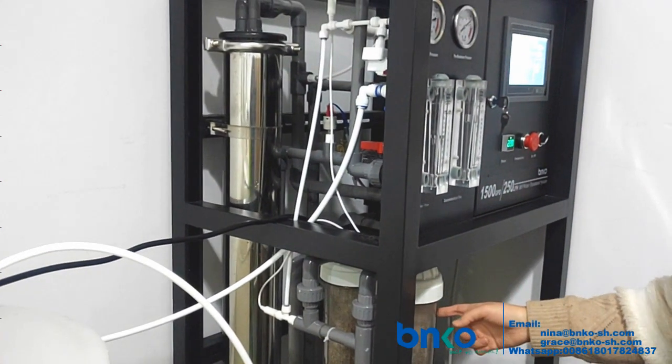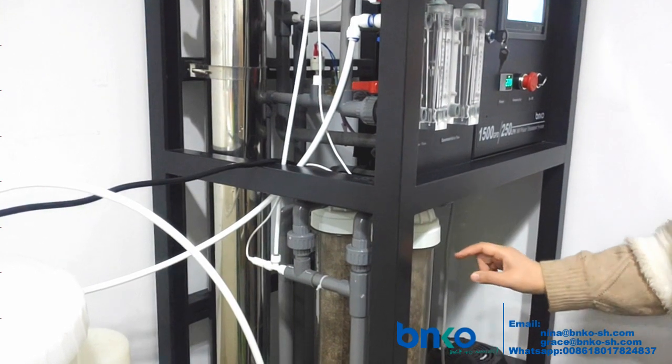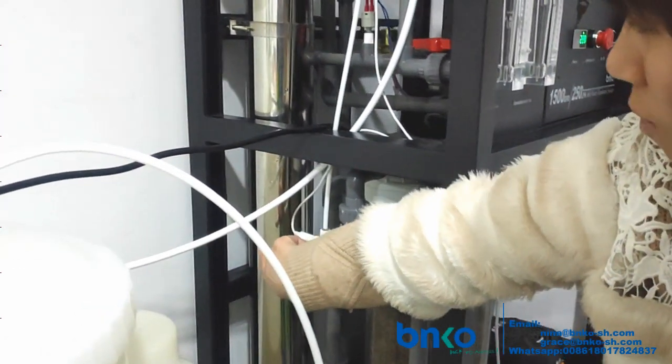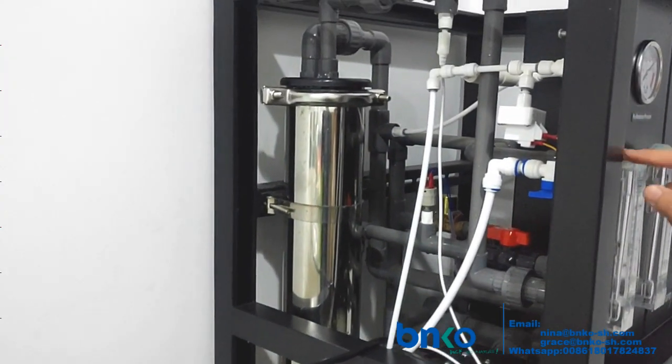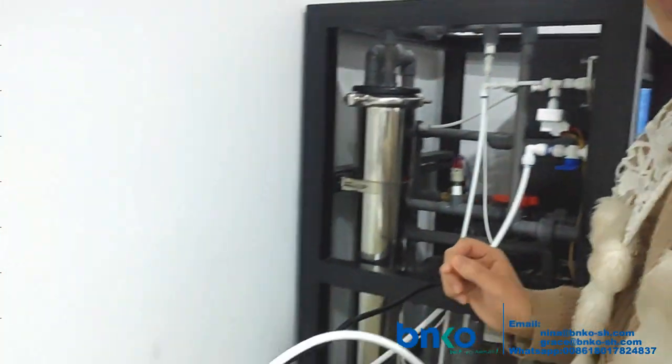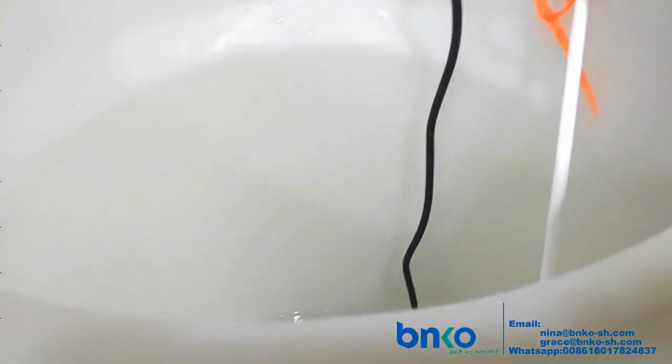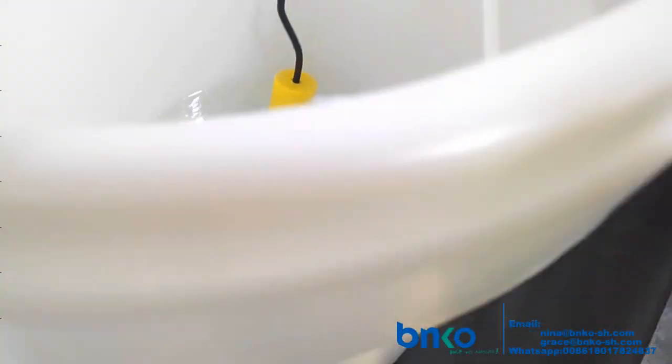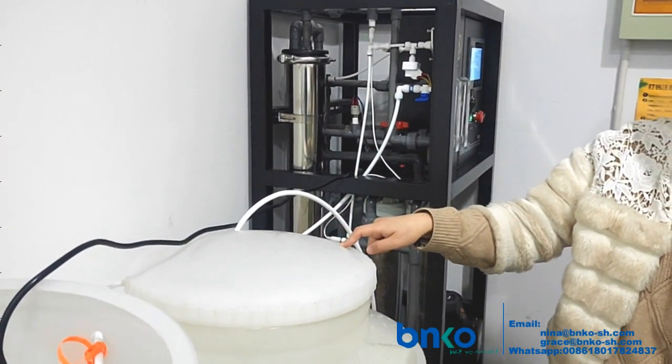Before the membrane, we have to remove the small particles, and then we add them to our own membrane. This is our pure water. It goes to this tank, and the waste water is over there. We put it back into the lower tank.